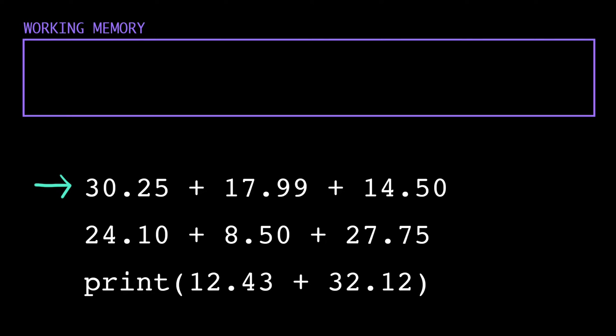When we run a program, the computer executes each instruction line by line. Then, when it finishes with an instruction, it clears out its working memory. So the computer has forgotten what it just did by the time it gets to the next line.